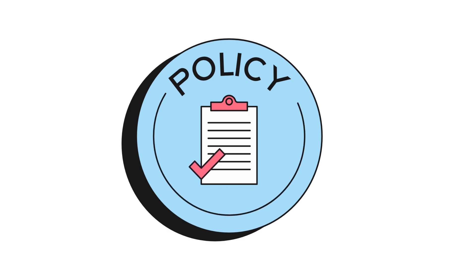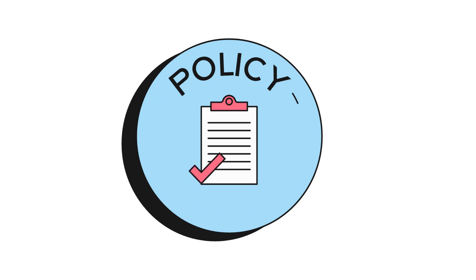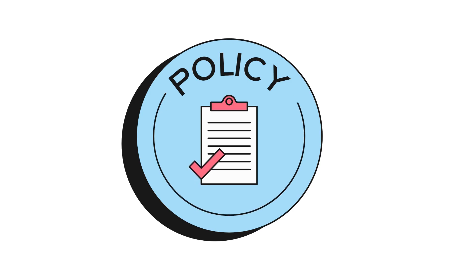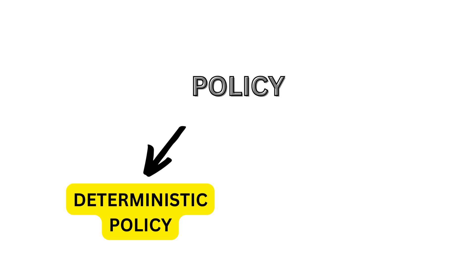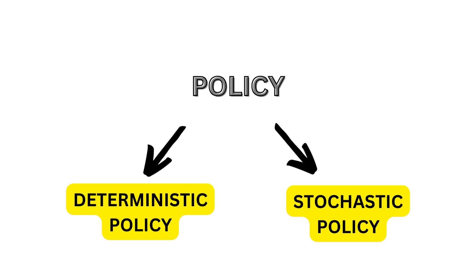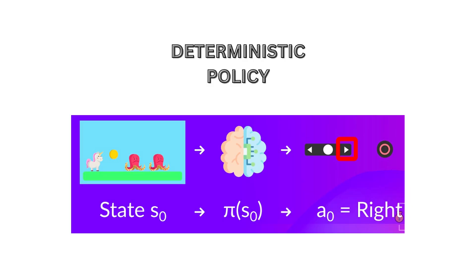Next, policy. Policy is the brain of reinforcement learning. An optimal policy is a state where the best action is chosen. We split policy into two types: deterministic policy and stochastic policy. With a deterministic policy, we get a direct mapping — for example, in a game with available actions left, right, top, bottom, the policy by default always gives us the right action. That is an explicit, deterministic policy.